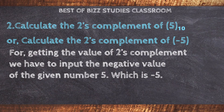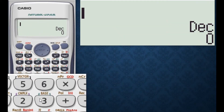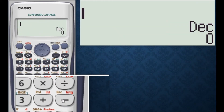Calculate the 2's complement of 5 base 10, or calculate the 2's complement of minus 5. For getting the value of 2's complement, we have to input the negative value of the given number 5, which is minus 5. Input minus 5 in decimal.